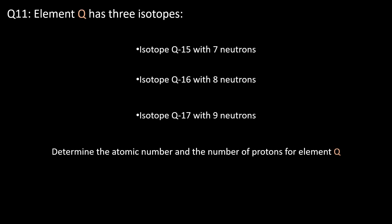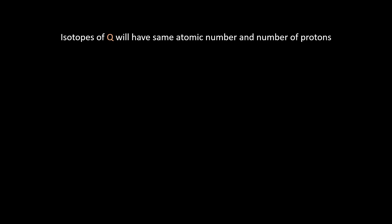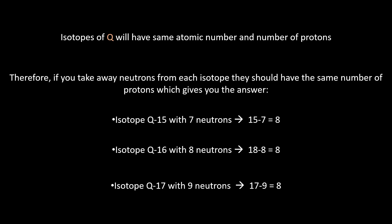Question eleven: element Q has three isotopes — isotope Q15 with seven neutrons, isotope Q16 with eight neutrons, and isotope Q17 with nine neutrons. Determine the atomic number and the number of protons for element Q. Since isotopes of the same element have the same number of protons, we can simply subtract the neutrons from the mass number for each isotope and we will get the same answer, which is eight — our atomic number and number of protons.